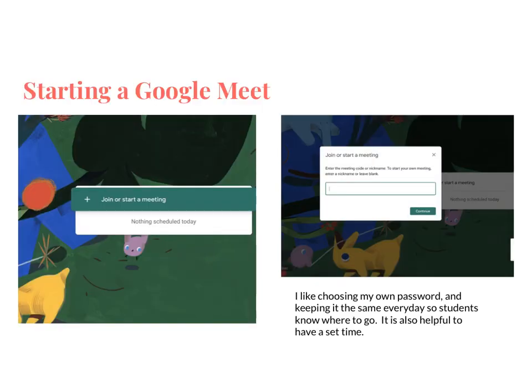If you're going to start a Google Meet, first you're going to click the little waffle on your google.com and find the Meet app. Click on it and it's going to ask you if you want to join or start a meeting, so you're going to push this plus sign to join or start that meeting.